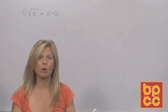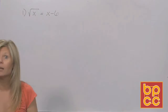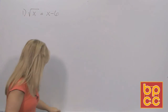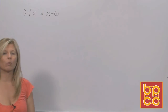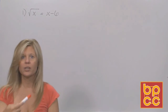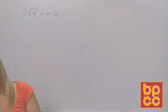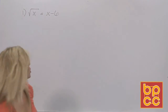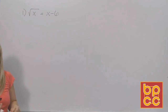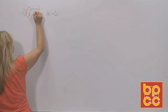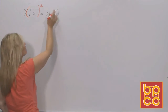Our first step says the root has to be isolated — it's got to be by itself — which it already is. Square rooting is an operation, and every operation has an opposite. The opposite of adding is subtracting, the opposite of multiplying is dividing, and the opposite of square rooting is going to be squaring. So the procedure is: first isolate the root, then do the opposite — square both sides.